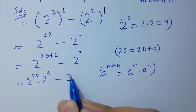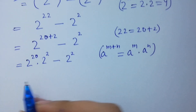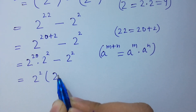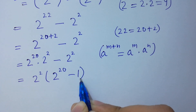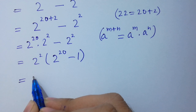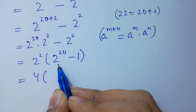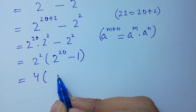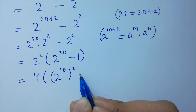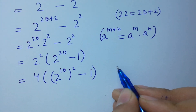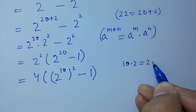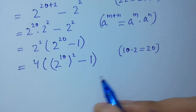So it will be 2 to the power 20 times 2 to the power 2, minus 2 squared. Since 2 squared is common, we have 2 squared times open bracket 2 to the power 20 minus 1 close bracket. Next, 2 squared is 4, and 2 to the power 20 is the same as 2 to the power 10, to the whole power 2, minus 1, since 10 times 2 equals 20.